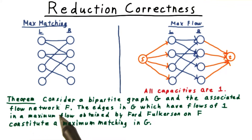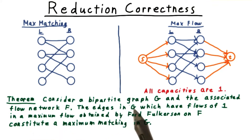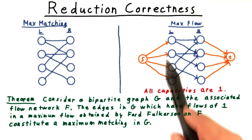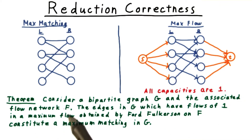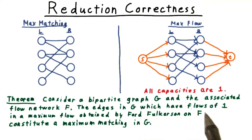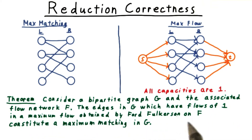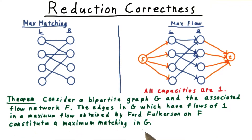We assert the correctness of the reduction with the following theorem. Consider a bipartite graph G and the associated flow network F, which we just constructed. The edges in G which have flows of 1 in a maximum flow obtained by Ford-Fulkerson on F constitute a maximum matching in the original graph G.